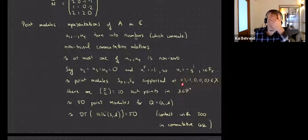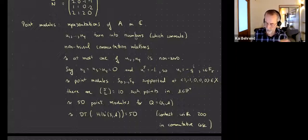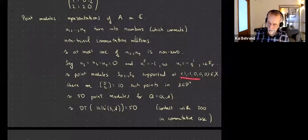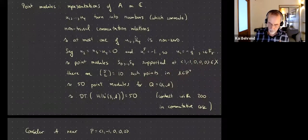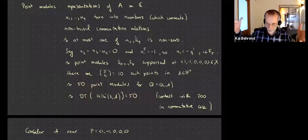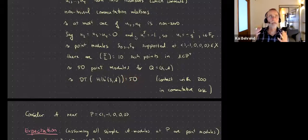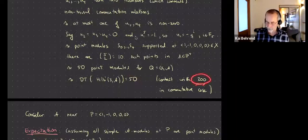So there are five simple modules over each of these special points, not just one as in the commutative case. How many such points are there? There are 5 coordinates and 3 of them have to be zero, so there are C(5,2)=10 such points. Altogether there are 50 point modules over the quantum Fermat quintic. So I've computed one DT invariant: HILB_1 = 50, an actual count of 50 points — in contrast with the commutative case where it was the negative Euler characteristic of the quintic, which is 200.